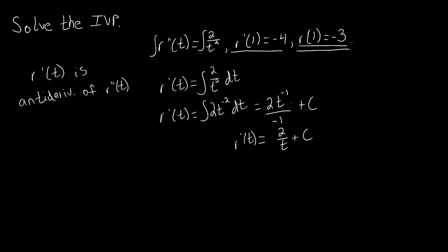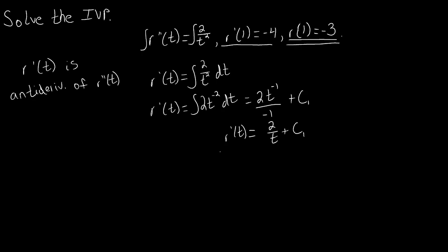Just like we did in the previous video, we're going to use our initial condition for our derivative to figure out the specific c value. But before I go on, I've got to account for that negative sign — so our derivative is actually negative 2 over t plus c1. Now we're going to solve for c1 such that our derivative satisfies the given condition. That means we have r prime of 1 equals negative 4.